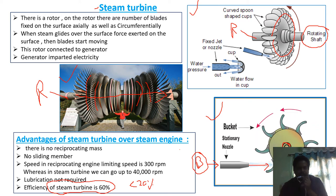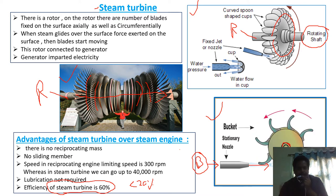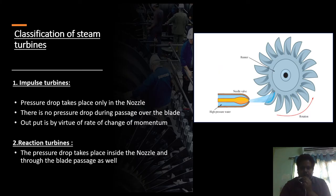These are the advantages of the steam turbine, which is why nowadays in almost all power plants, steam turbines are used to produce power. Now, classification of steam turbines: based on type of blades and blade arrangement working principle, steam turbines are classified into several types, but the main types are impulse turbine and reaction turbine.